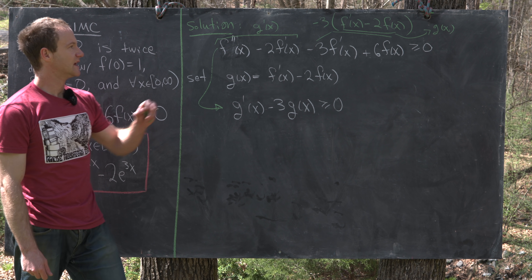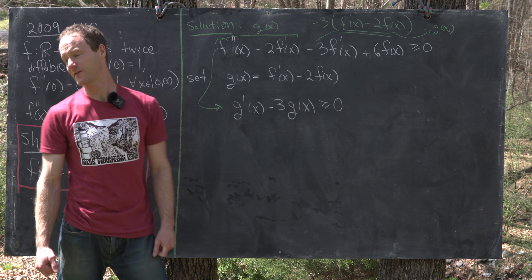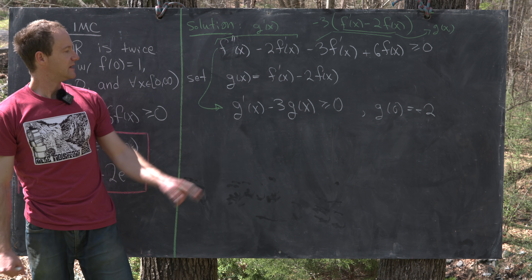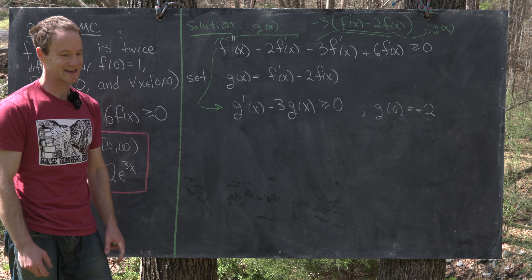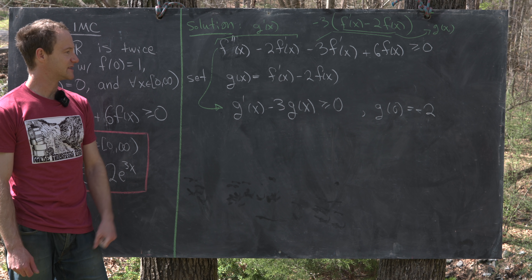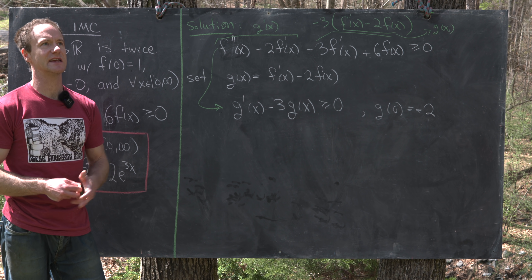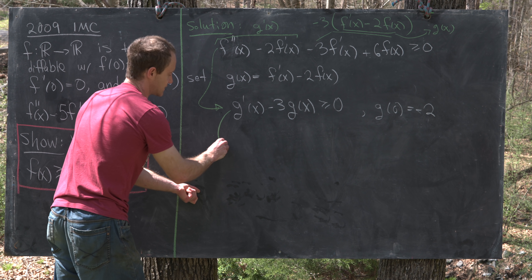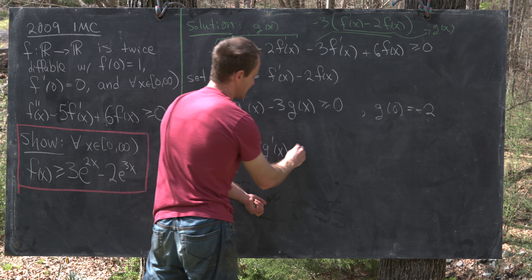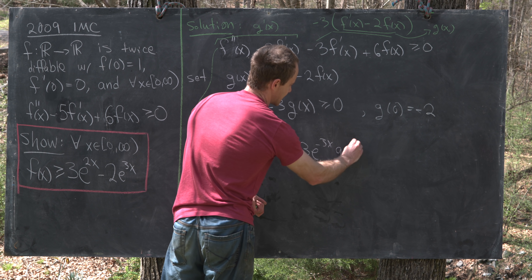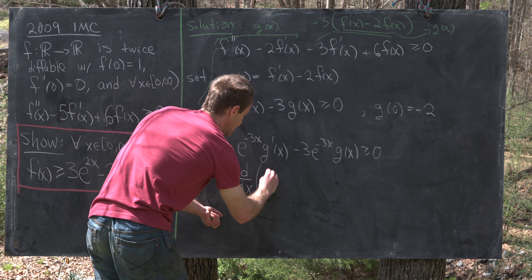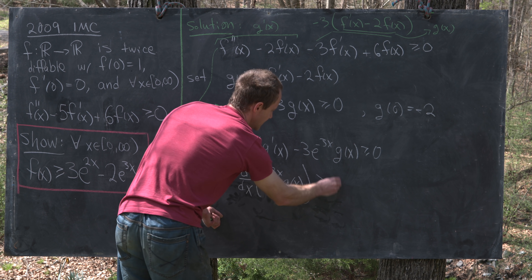Taking inspiration from integrating factors for first-order linear differential equations, we multiply the inequality by e^{−3x}: e^{−3x}g'(x) − 3e^{−3x}g(x) ≥ 0. By the product rule and chain rule, the left side is exactly the derivative of e^{−3x}g(x), so we have d/dx[e^{−3x}g(x)] ≥ 0.